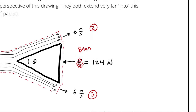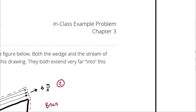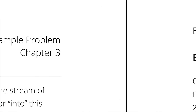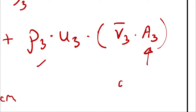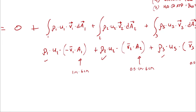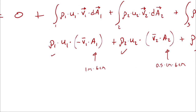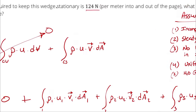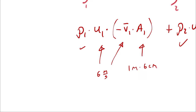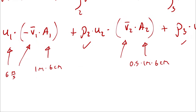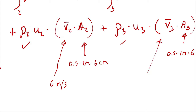States 2 and 3 each have half of that cross-sectional area: 0.5 times one meter times six centimeters. For state 1, the average velocity equals the x-component of velocity, which is 6 m/s. For state 2, the average velocity is still 6 m/s, and for state 3 the average velocity is also 6 m/s.